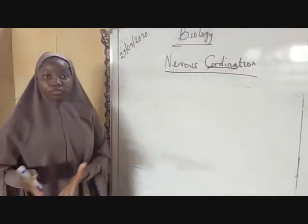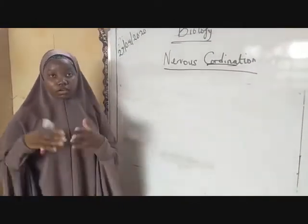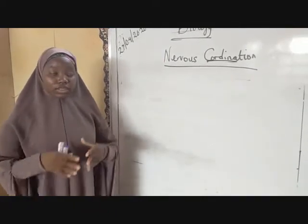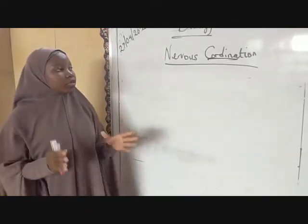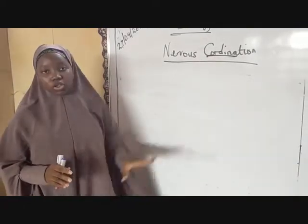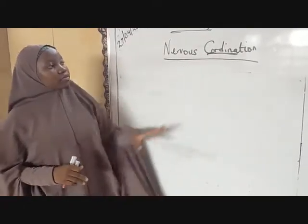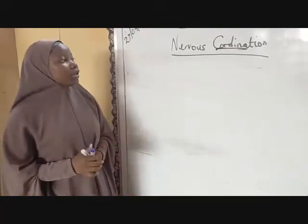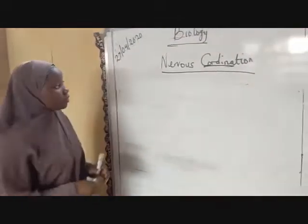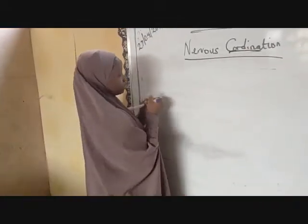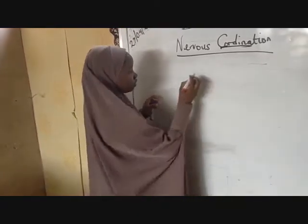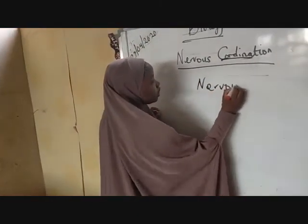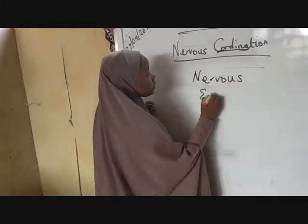When you are moving, you are feeding, your digestive system is working, your brain is also working at the same time — all these processes are what we know as coordination. For the body to be fully and effectively coordinated, there are two systems involved: the nervous system and the endocrine system.